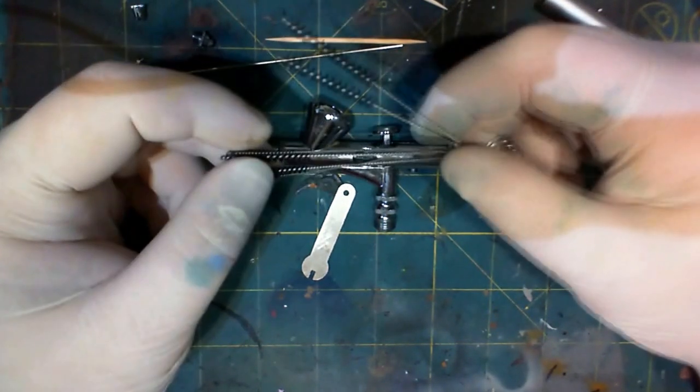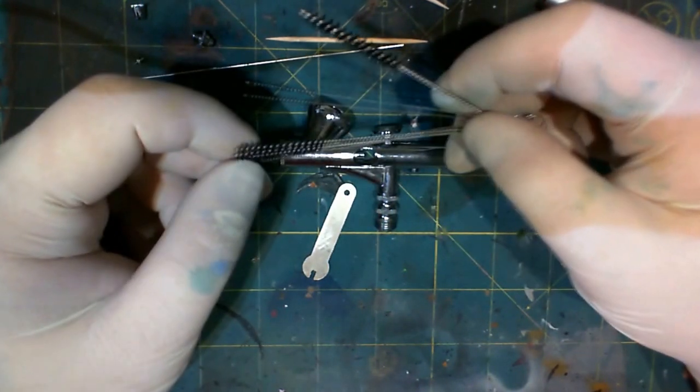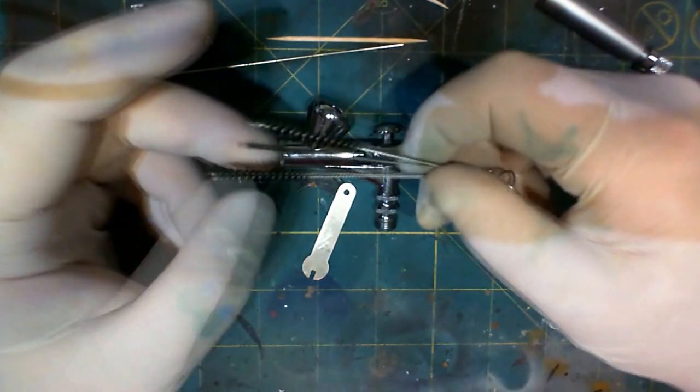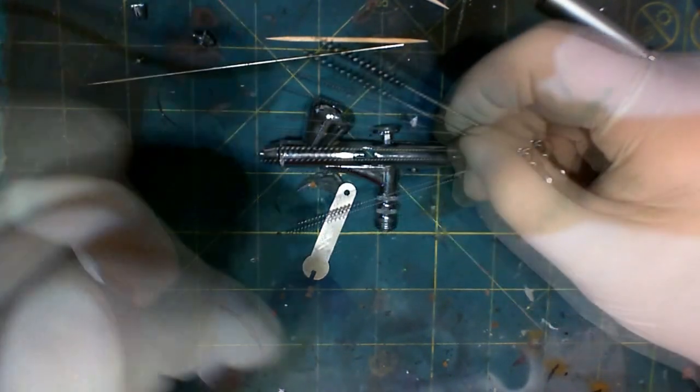Normally you really shouldn't need to remove that because all of the paint is in this area here. I have these brushes that are fantastic for airbrush cleaning. You can get them for a few bucks on eBay.